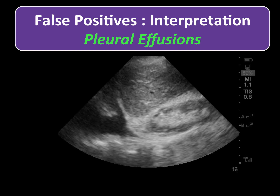Our next sources of false positive stem from errors in image interpretation. Here, we will start with an example where free fluid is present, but it is not in the peritoneal cavity. Although we were properly focused on the hepatorenal interface between the liver and kidney, our eyes may be drawn to fluid leading to a momentary lapse where we forget we are no longer looking at our area of interest. Fluid is seen in the pleural space and not our abdominal interface, clearly demonstrated by seeing its position relative to the diaphragm. In the proper setting, this may be a pleural effusion, empyema, chylothorax, or hemothorax.